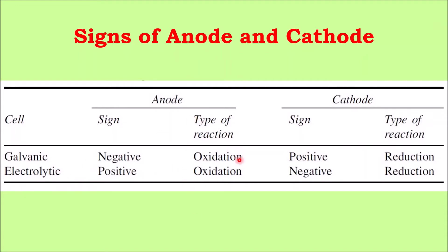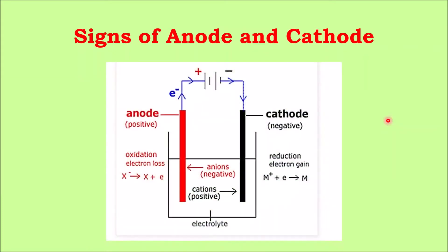One very important thing to note is that oxidation reaction always takes place at the anode and reduction reaction always takes place at the cathode, irrespective of the type of cell — whether it is galvanic or electrolytic. Always, oxidation will take place at the anode and reduction will take place at the cathode. Now let us see why the anode is positive and why the cathode is negative.